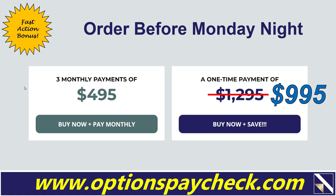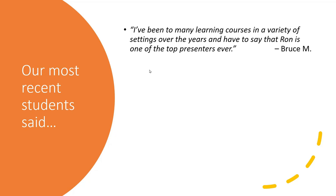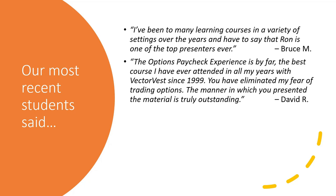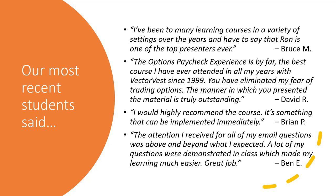There are also 12 total office hour sessions — two per week later in the month. Everything is recorded so if you can't attend live it's fine. Quick summary: you get the Options Paycheck training program with eight modules, videos, checklists, and cheat sheets; the Module Mastery bonus package; and the Implementation Month. If you order before Monday night, you get our lowest price of $995. Here are some comments from recent fall 2022 attendees: Bruce said Ron is one of the top presenters he's ever seen; David called it the best course in all his years with VectorVest since 1999.